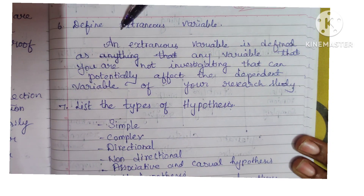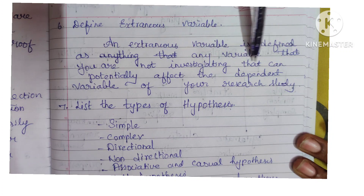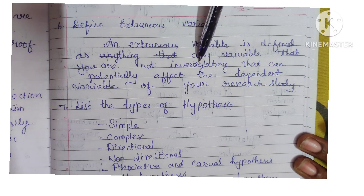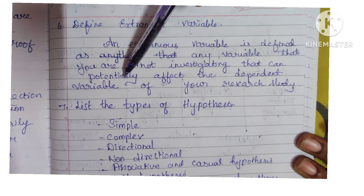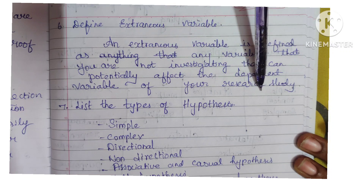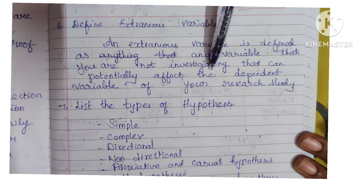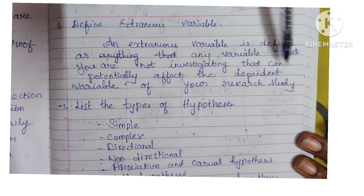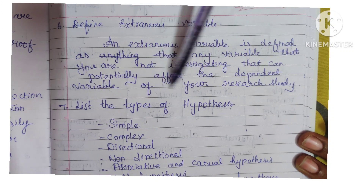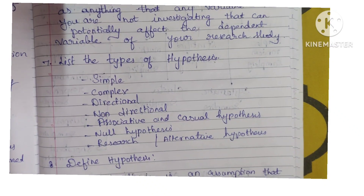Sixth question: define extraneous variable. An extraneous variable is defined as any variable that you are not investigating but that can potentially affect the dependent variable of your research study.